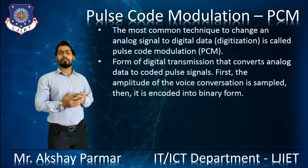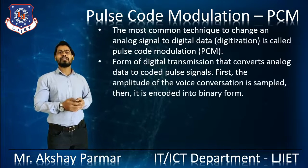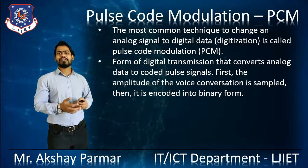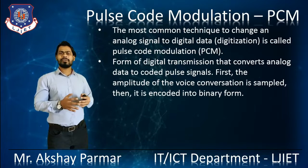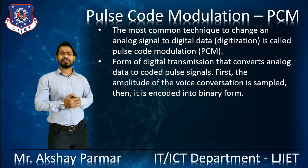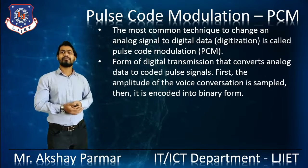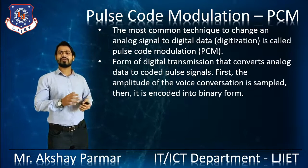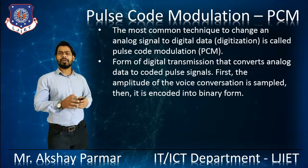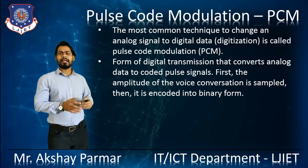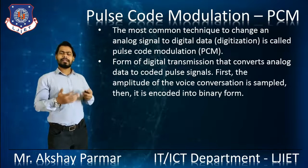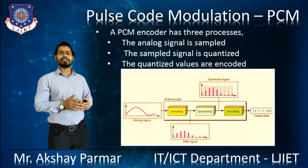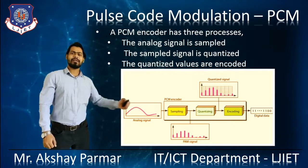Another type is Pulse Code Modulation, PCM. This is the most common technique to change the Analog Signal into Digital Data, also called digitization. PCM is a form of Digital Transmission that converts Analog Data to coded pulses — the amplitude of the voice signal is sampled and then encoded into binary form. The PCM encoder has three processes: Sampling, Quantization, and Line Coding. Whenever we give an Analog Signal to the PCM encoder, it converts that Analog Signal into the Digital Signal.